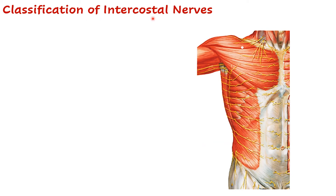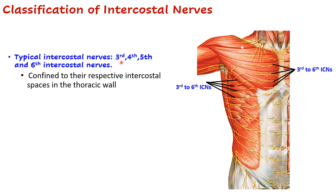Intercostal nerves are classified as either typical or atypical. There are only four typical intercostal nerves: the 3rd, 4th, 5th, and 6th intercostal nerves, whose branches can be seen on the anterolateral aspect of the thoracic wall. They are called typical because they are confined to their respective intercostal spaces in the thoracic wall, supplying only the thoracic wall and giving branches within their respective intercostal space.